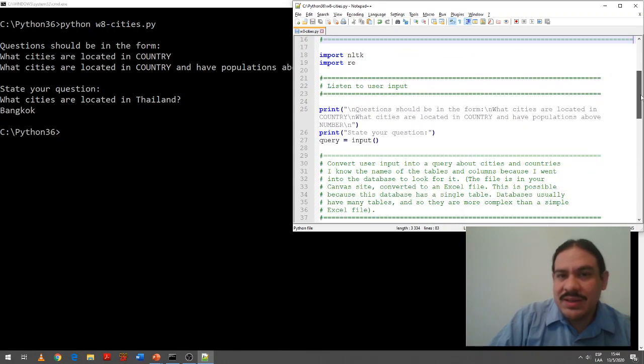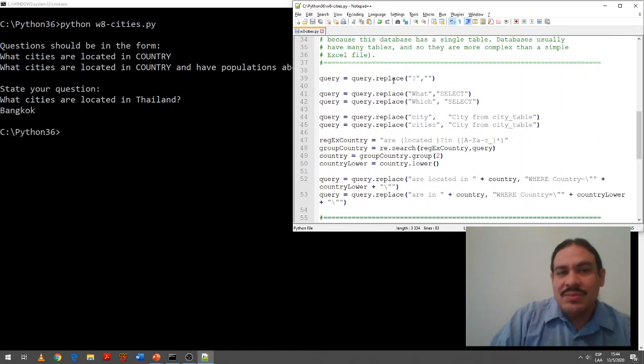We have a bunch of metadata here. We have NLTK and then our old friends regular expressions. We print the question. State your question and listen to the input from the user. We are replacing the question marks with nothing. We are replacing the word what with select. Notice that we could also ask which cities are located in Thailand and it would give us the same information. It replaces the word city and cities for the name of the column city from city table. Then we have here a beautiful regular expression which has a capturing group here which gets you the name of the country.